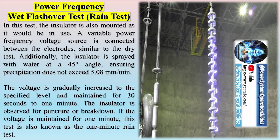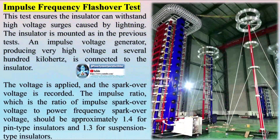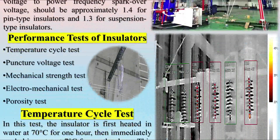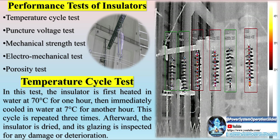Let us discuss flashover tests. Three types of flashover tests are performed. First, the power frequency dry flashover test: the insulator is mounted as it would be in actual use, and a variable power frequency voltage source is connected between the insulator's electrodes. The voltage is gradually increased to the specified level, which is below the minimum flashover voltage. Flashover voltage is the point at which surrounding air breaks down and becomes conductive. The insulator must withstand the specified voltage for one minute without experiencing flashover.